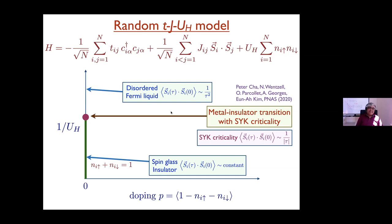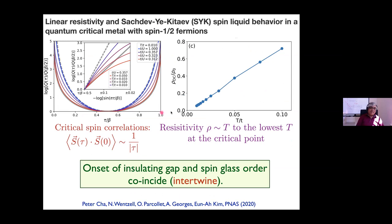Here is some of their numerical data: a plot of the spin correlation function at different temperatures right at the critical point, which fits very beautifully to the finite-temperature realization of the 1/τ decay. Also right at the critical point they measured the resistivity, which is linear in temperature down to the lowest temperature they looked at — about 0.01 of the hopping, or bandwidth. This is probably a numerical record for observing linear resistivity in terms of how low in temperature it holds. It holds only right at the critical point; moving away to the disordered Fermi-liquid side, the resistivity eventually becomes T².